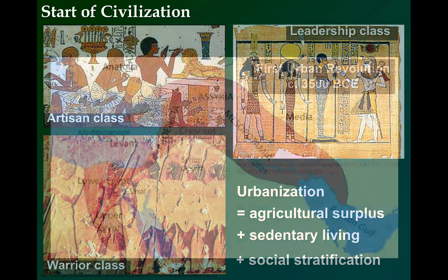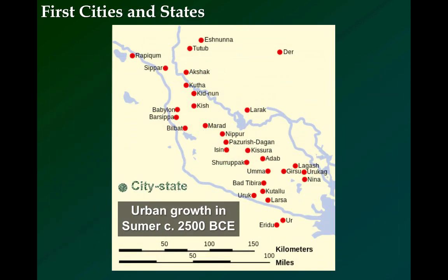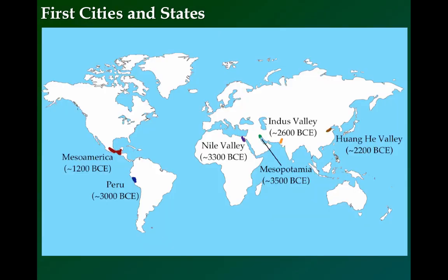The first urban revolution started around 3500 BCE on the supercontinent of Eurasia along the Fertile Crescent, aptly named the Cradle of Civilization. You can see some of the city-states highlighted within the Mesopotamian state of Sumer in the map on your screen. The first urban hearth and civilization took hold between the Tigris and Euphrates in Mesopotamia, Greek for 'land between rivers.' Developing soon after were the Egyptians along the Nile.